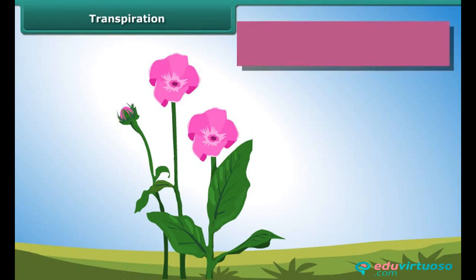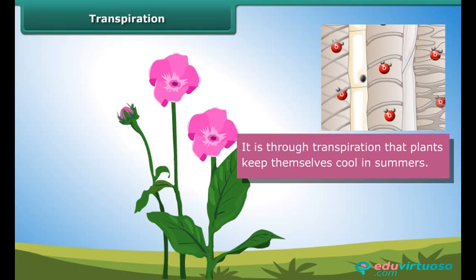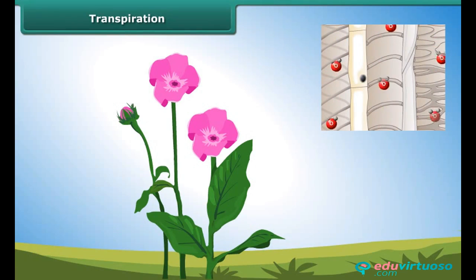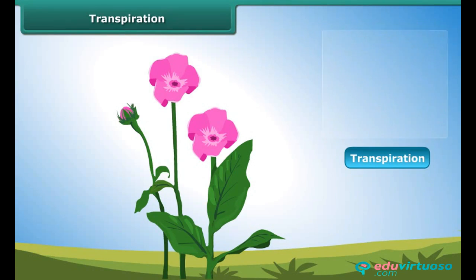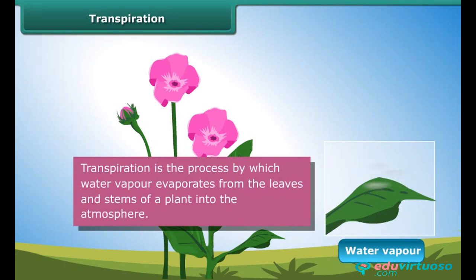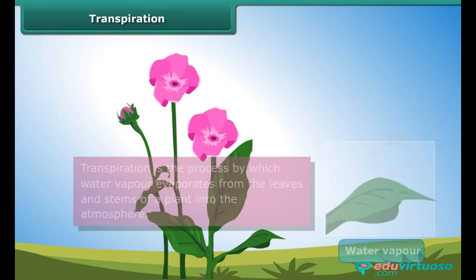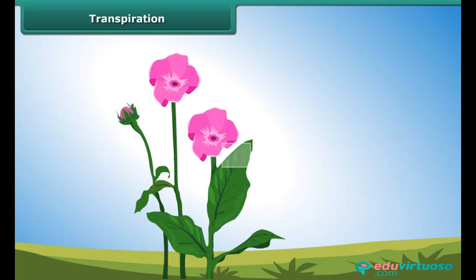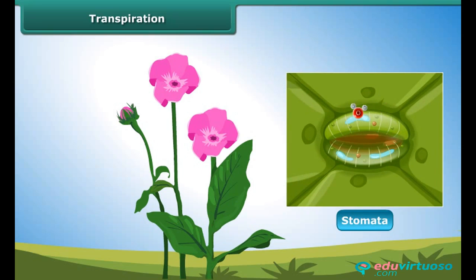An important function of the leaf is to keep the plant cool in summers. This is accomplished through transpiration. Transpiration is the process by which water vapor evaporates from the leaves and stems of a plant into the atmosphere. Small pores called stomata on the underside of the leaves facilitate transpiration.